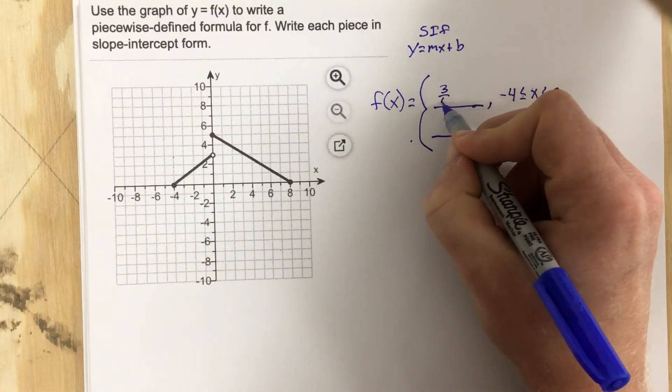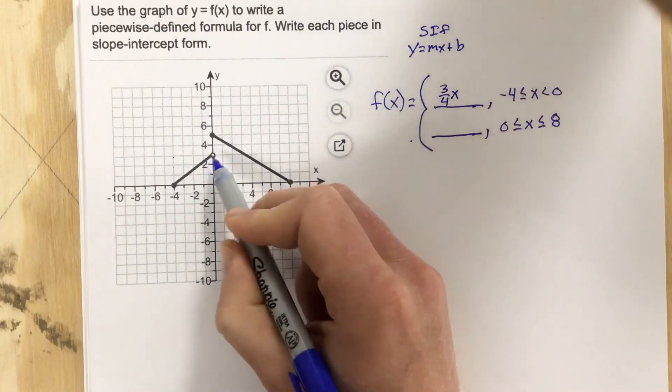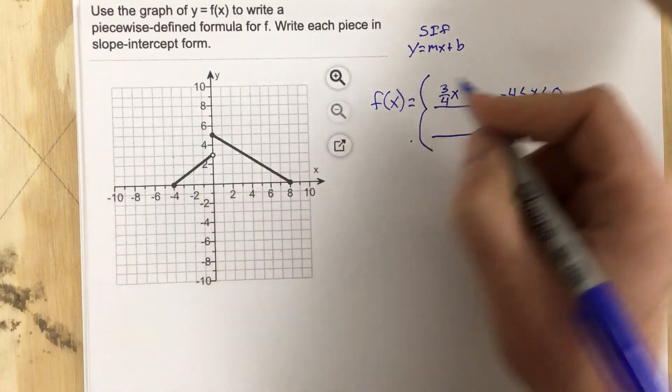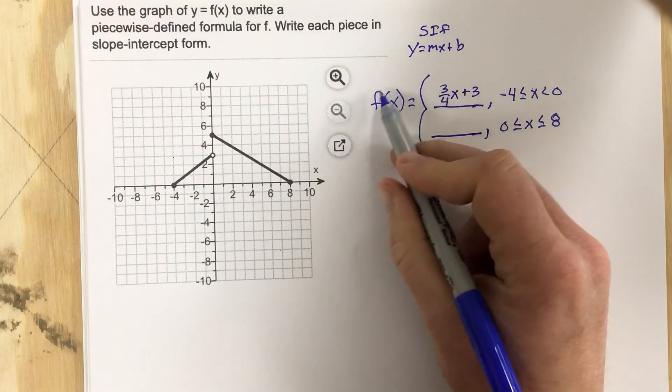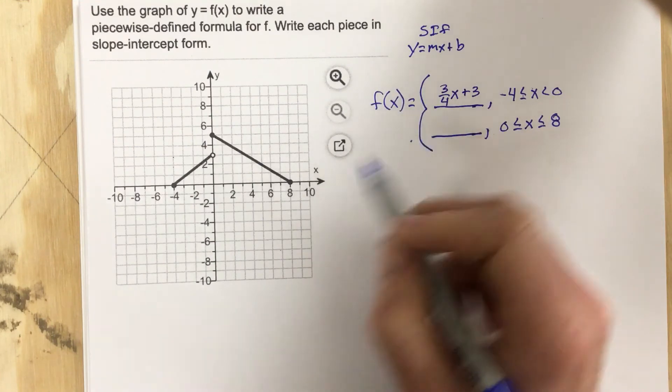So it's three over four x, and my y-intercept I can see is three, so plus three. I don't have to say y equals in here because it says f of x equals. It's a piecewise function.